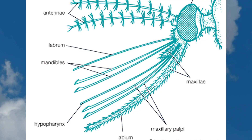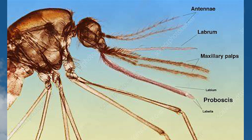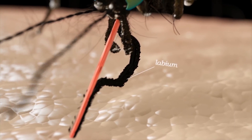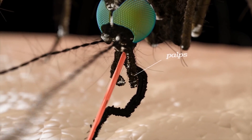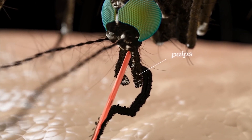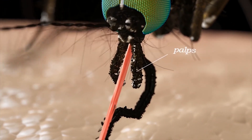The first pair, known as mandibles and maxillae, function as a sheath to protect the other stylets as they pierce the skin. The second pair consists of the labrum, which serves as a bridge to help guide the other stylets into the skin. The final pair is the labium, which surrounds and encases the other stylets, functioning as a protective covering for the delicate stylets during feeding.